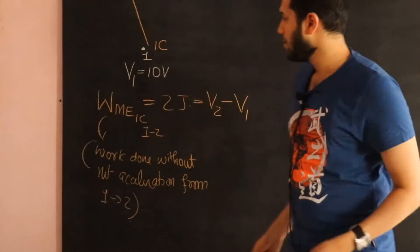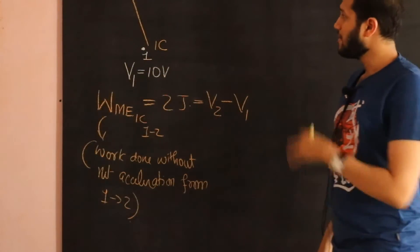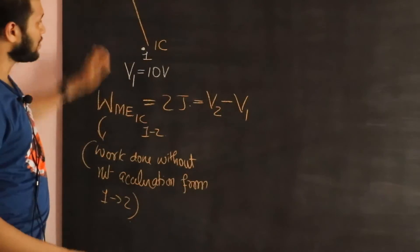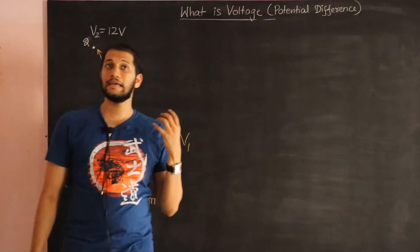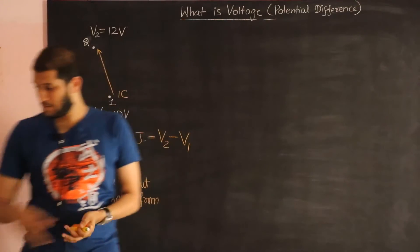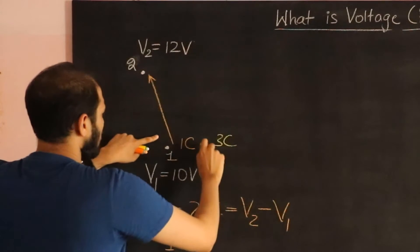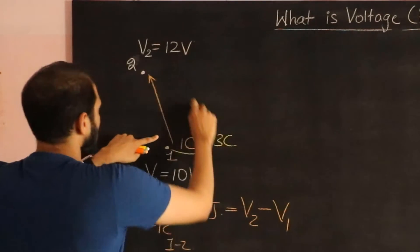That's the idea behind the voltage. Now let's think about this. What if instead of moving a coulomb from here to here, we ended up moving say 3 coulombs. So what if I moved 3 coulombs from this point to this point.